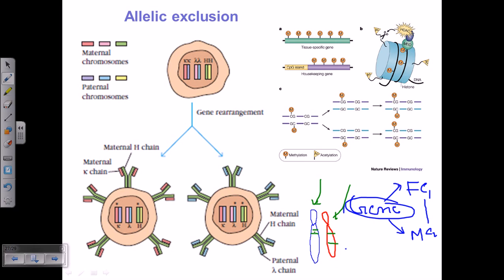Now if the rearrangement of these genes in the first chromosome — the blue chromosome — occurs successfully, then it will prevent the expression of this gene from the red chromosome. So if the genes are expressed by this chromosome, it will lead to the exclusion of expression from the other one. This is called the exclusion of alleles, or allelic exclusion — one type of successful rearrangement blocking the expression of a gene from the other chromosome.